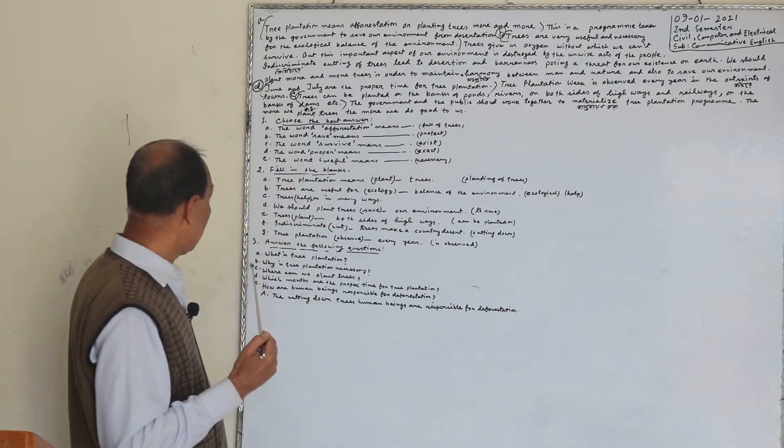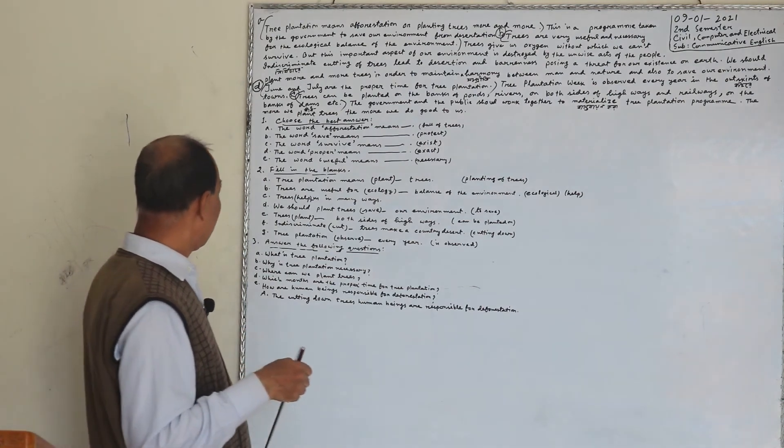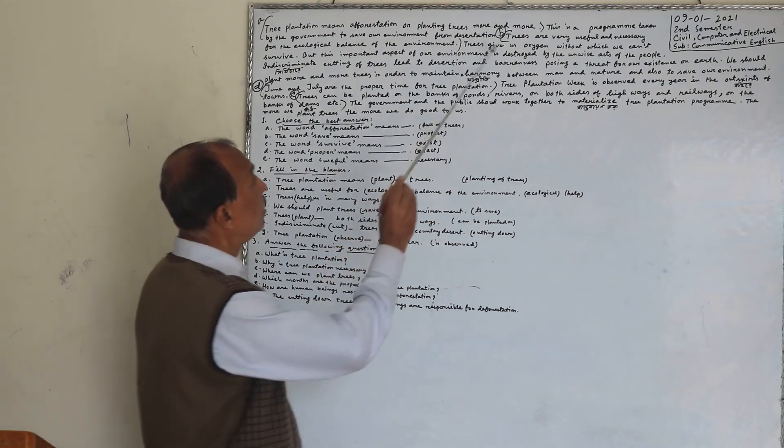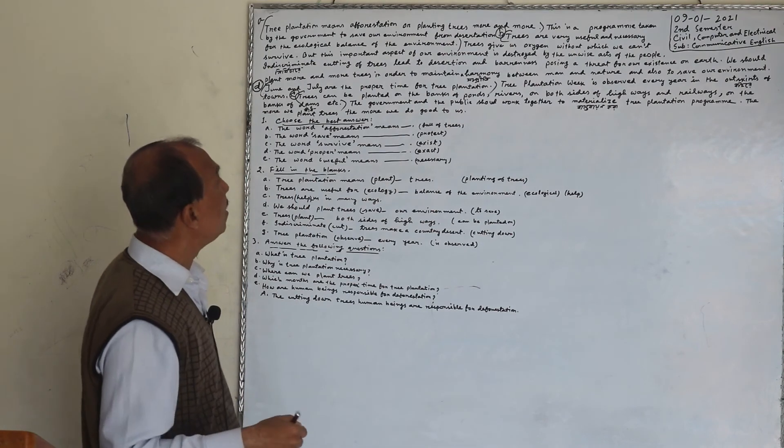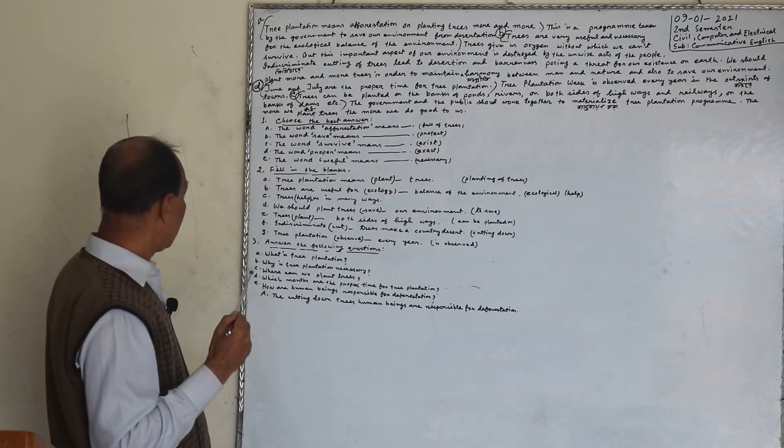Number B, why is tree plantation necessary? Trees are very useful and necessary for the ecological balance of the environment.